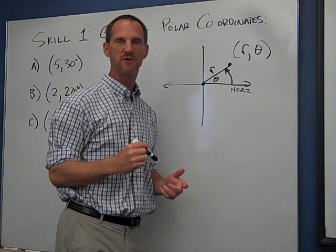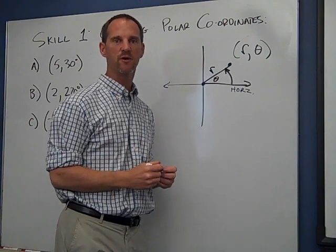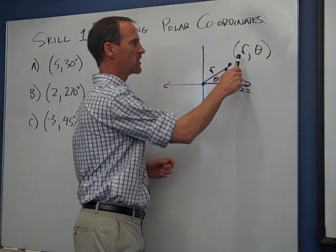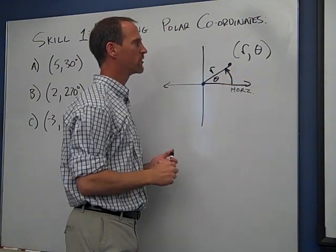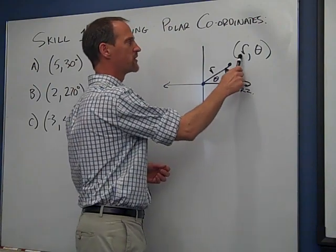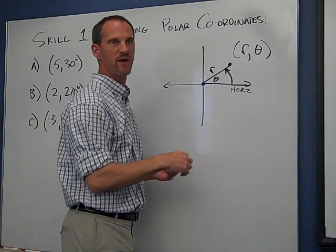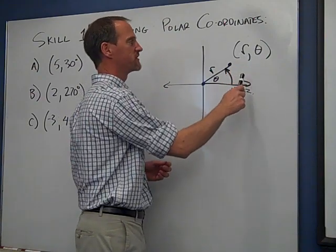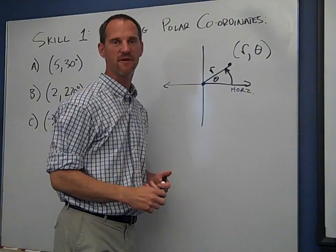There's common points between rectangular and polar. They both use two numbers to get to the spot. It's always the ordered pair that's important. Three, four is different than four, three, just like three and 30 is different than 30 and three. Okay, very different coordination.